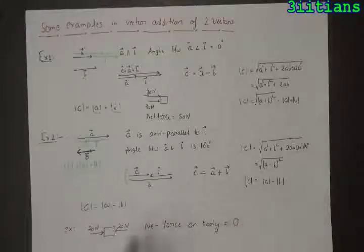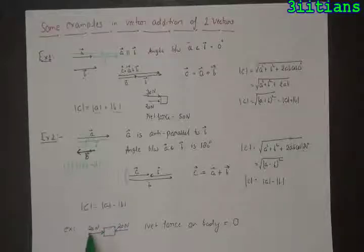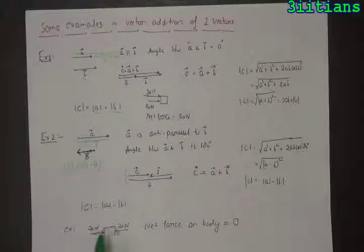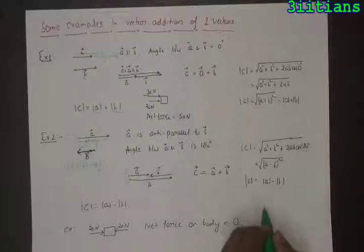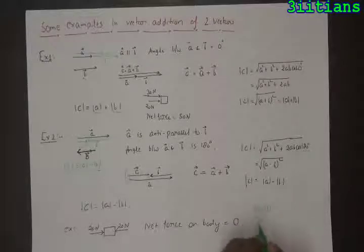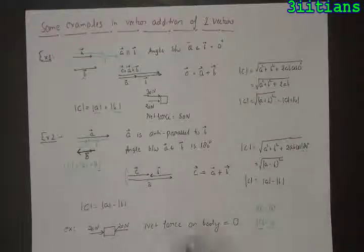For example, if there is a block on which two forces are acting in opposite directions, 20 newtons each — the block is not going to move because the net force on the block will become equal to 0. In this case, the magnitude of a vector equals the magnitude of b vector, so the net sum of c vector will be equal to 0. The net force on the body is therefore equal to 0.